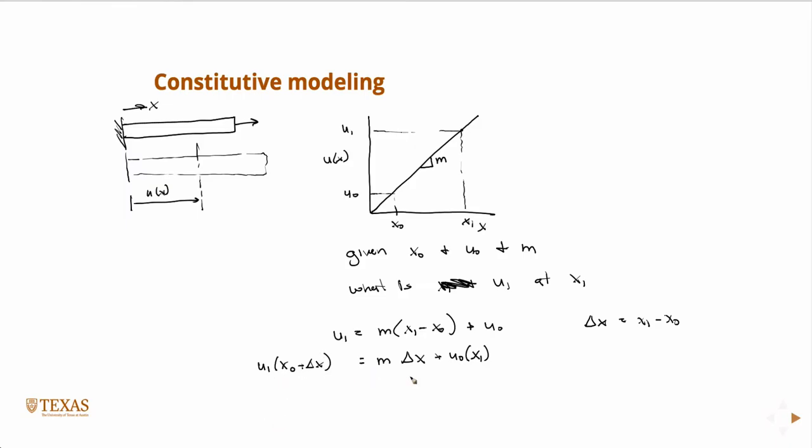So then I can essentially solve this equation for m: u1 at (x0 plus delta x) minus u0 at x0, divided by delta x, equals m. And what do we have here? This is essentially a change in length over length, right?